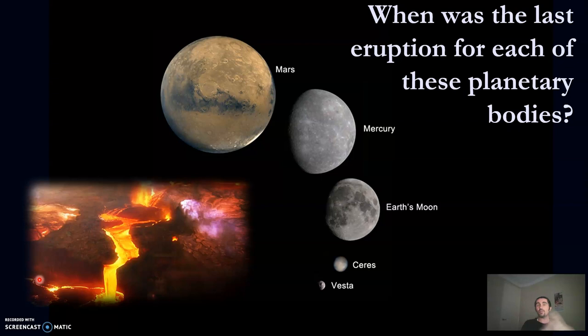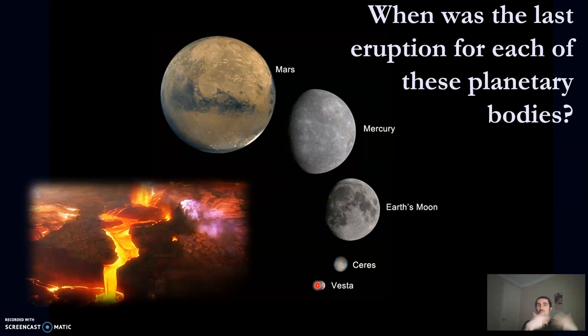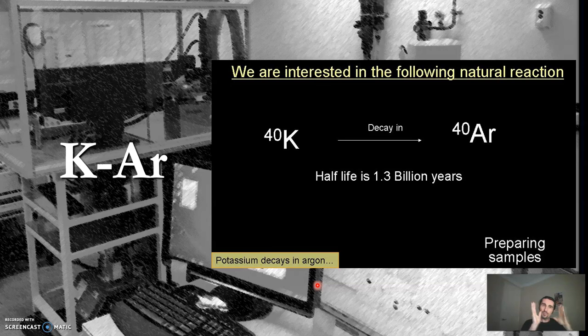If you look at planets and asteroids, some of them sustain volcanism, but we don't really know when this volcanism stopped, when was the last eruption. It's a bit intuitive, but the bigger the body is, the longer it's going to sustain volcanism. So what I want to do is go straight to the tiniest of them all — Vesta — because if it's small, it's easier to understand. It's less complex. There's no plate tectonics and things like that, like on Earth.